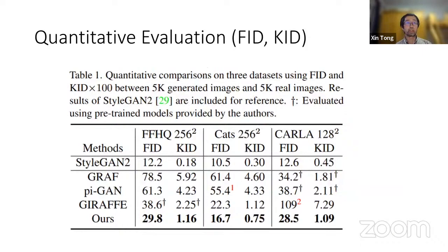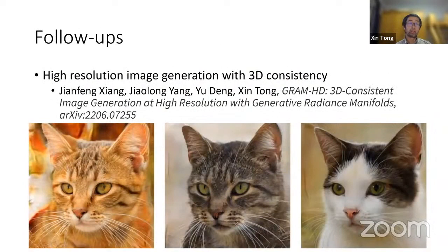For quantitative evaluations using FID and KID scores, traditional StyleGAN2 still generates the best results since it only targets 2D image generation without 3D consistency. Among 3D-aware methods that generate 3D representations for image rendering — such as GIRAFFE, Pi-GAN — our method generates much better results with better FID and KID scores. This work was published as an oral paper at CVPR. We also extended it to further improve image resolution in a follow-up work called GRAM HD, which is already on arXiv.